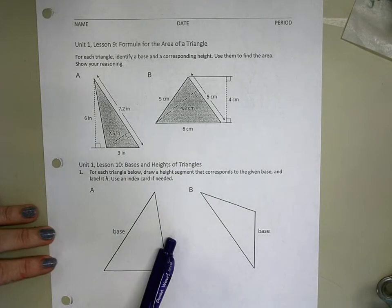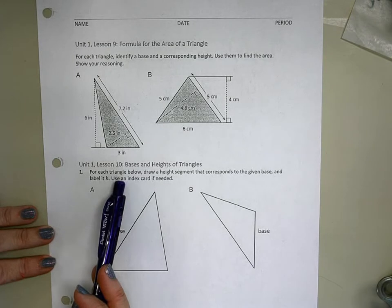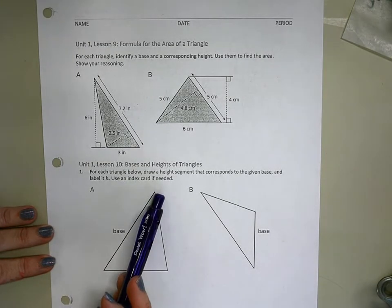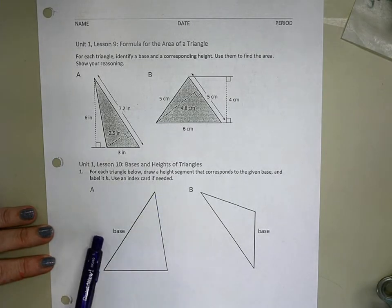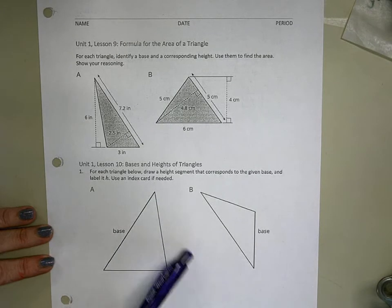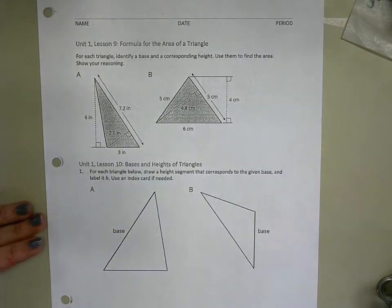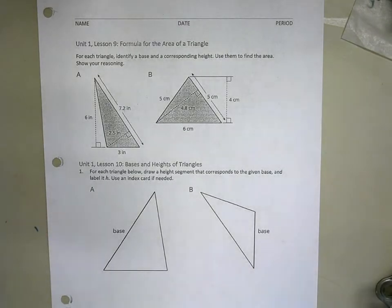The question I pulled randomly was for this question right here, and it says for each triangle below, draw a height segment that corresponds to the given base and label it each. You can use any kind of straight edge. It doesn't have to be an index card. I have an index card, but you can use a different straight edge instead if you'd like.